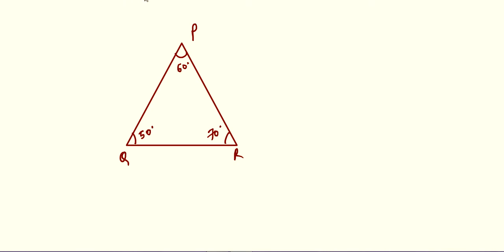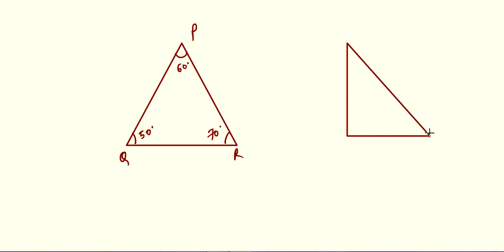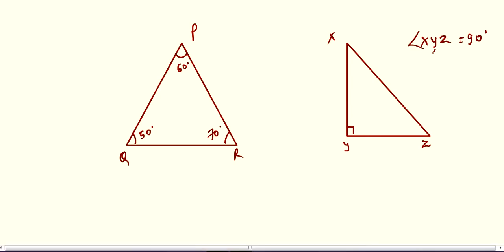The next type is right angle triangle. In a right angle triangle, one angle is exactly 90 degrees. In this diagram, angle XYZ equals 90 degrees.